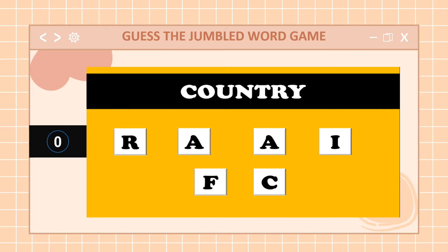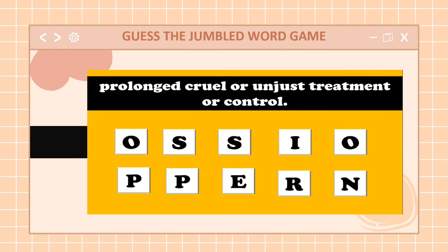Let's proceed to the second word. The second word is a prolonged cruel or unjust treatment or control. Your 10 seconds starts now. Time is up. What's the word, class? Very good — the word is oppression.